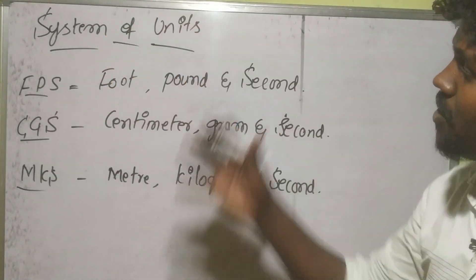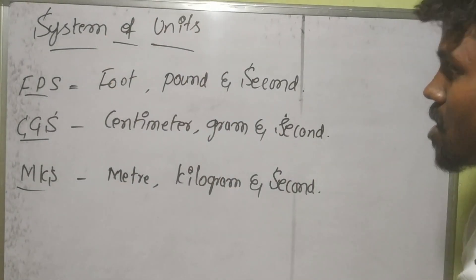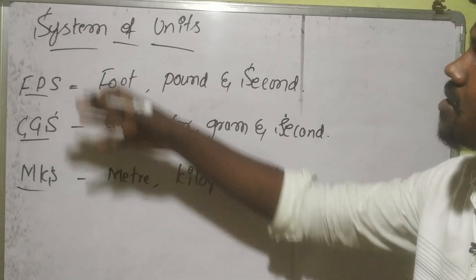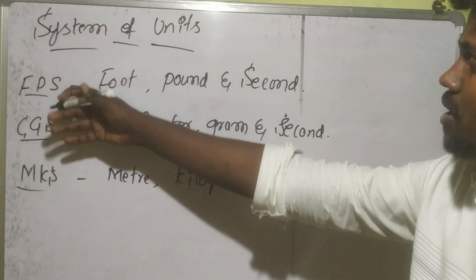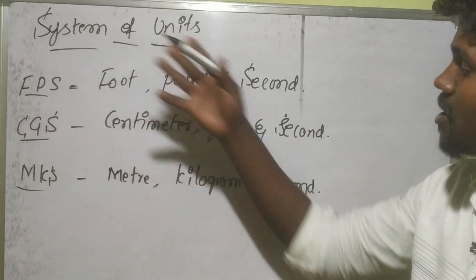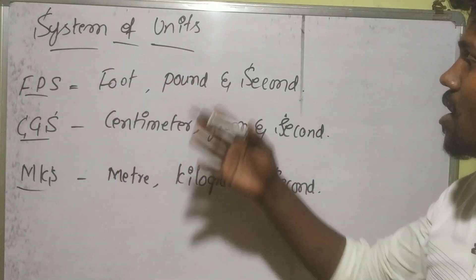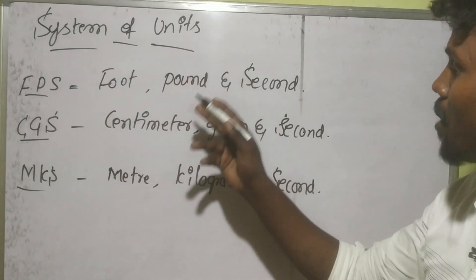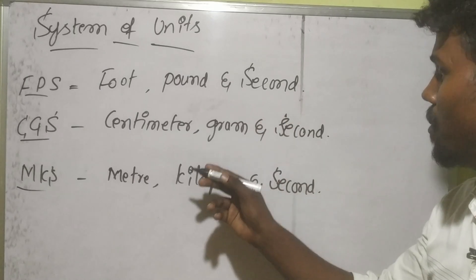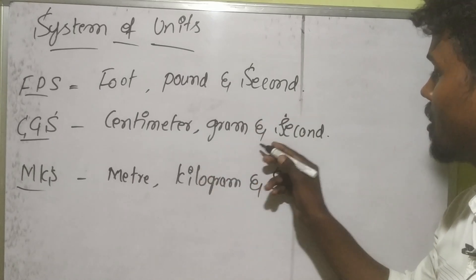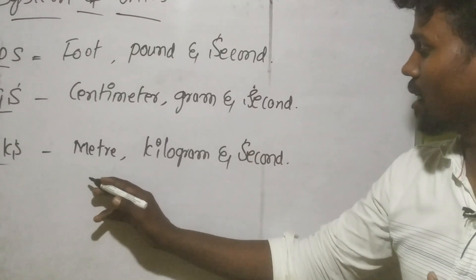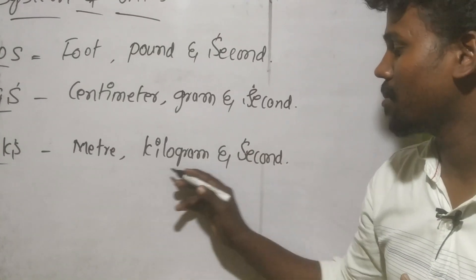Next concept: system of units. There are three types of systems of units. The first is FPS — foot, pound, and second. The second is CGS — centimeter, gram, and second. The third is MKS — meter, kilogram, and second. There are also seven basic SI units.